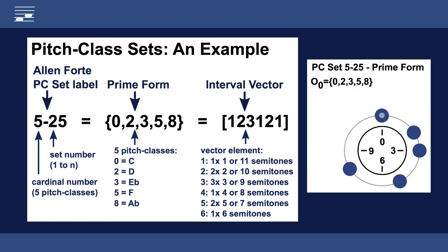The example with name 5-25 contains the cardinal number 5, which is the number of pitches in the set. The prime form shows the actual pitch classes with integer numbers 0 to 11 along the chromatic scale. And the interval vector has six number elements for specific semitone intervals in the set.